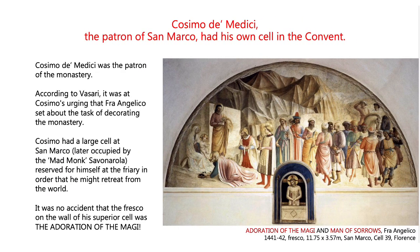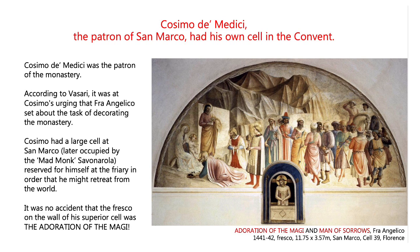Cosimo of course had his own cell, and given he'd given all this money he had the flashiest of all the frescoes. As with many rich patrons, what they wanted was the Adoration of the Magi — the three kings coming to give their gifts to Christ. The reason rich patrons wanted this scene is because it could be very flash: these were kings with a lot of money, a big retinue, giving very expensive gifts. Look at this fresco — it's much flashier than any of the others in San Marco, because it's Cosimo's own private cell.